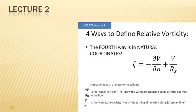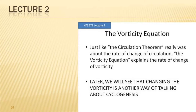We had four different ways to define relative vorticity: as a cross product, one with k-hat dot, a component form (partial v / partial x minus partial u / partial y), and a fourth way using natural coordinates. Make sure you can work through and understand all these different terms — what they mean about shear vorticity and curvature vorticity.